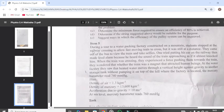This is Item 5. During a tour at a water packing factory constructed at a mountain, students stopped at the railway crossing to allow fast-moving trains to cross. When it was still at a distance, they came out of the bus to view the train and take selfies. One tried putting his ear on the railway. The train then made a loud alarm because he heard the sound of the train approaching as if it almost knocked him. When the train was crossing, they experienced a force pulling them towards the train. They wondered whether the train was a magnet that attracted human beings.